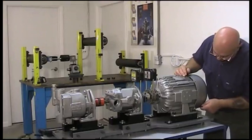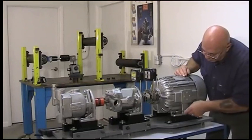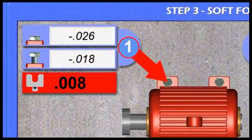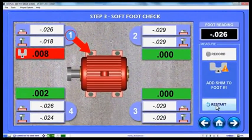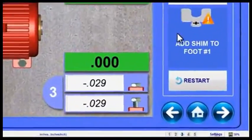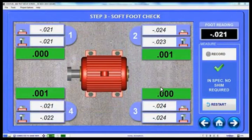Notice Couple 6 reminds you to tighten the foot and shows that foot 2 is ready to take data. Continue this process for all four feet, following the on-screen instructions. Couple 6 will then identify the foot with the biggest change in alignment value and if out of tolerance, recommend the shim to fix it. All you need to do is add the shim, tighten the bolt and retake the data to confirm the soft foot has been fixed.